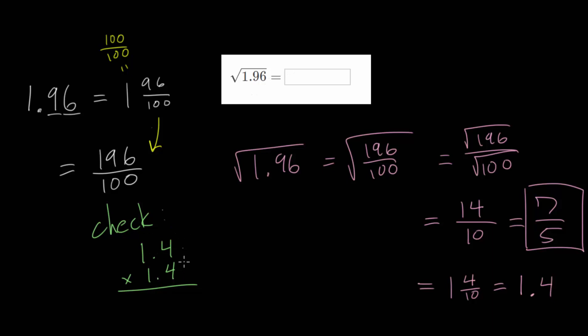So to multiply decimals, remember, you ignore the decimals first, and then at the end, you count up how many decimal places you have in total, which is 2, and you move the decimal two places over. So we'll do that at the end. So let's just ignore them for now.